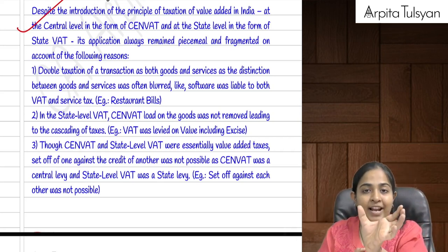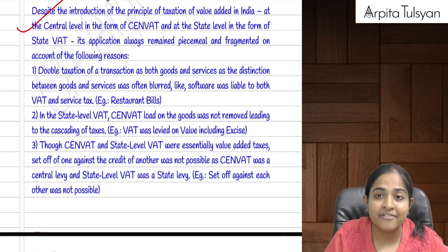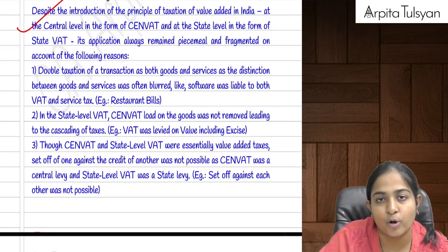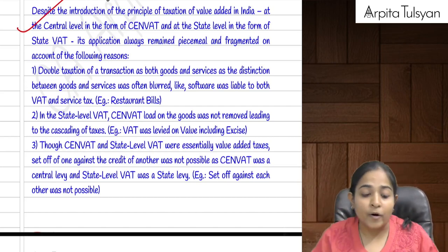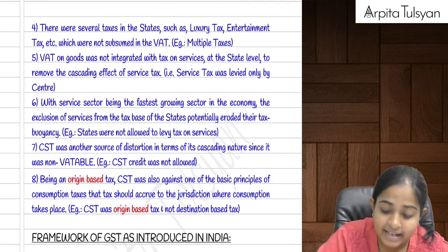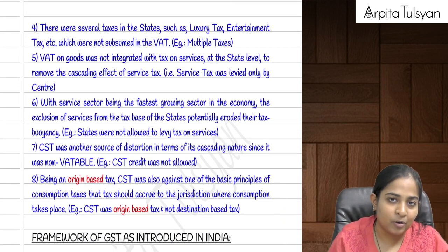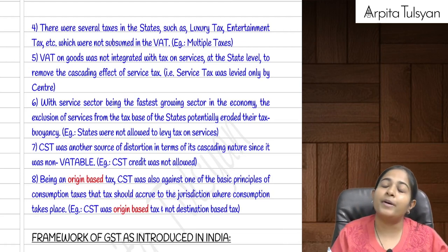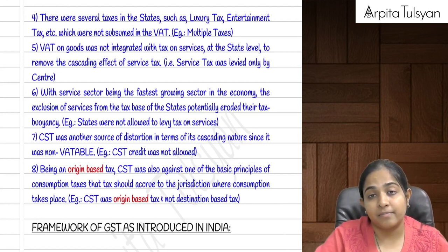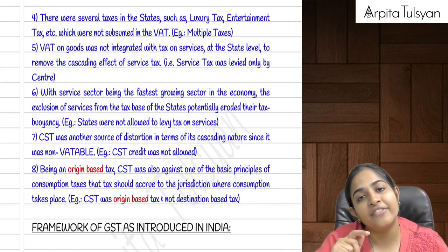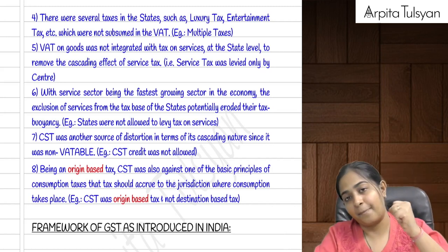Excise duty was levied on manufacture of goods, and VAT was also applicable on the same value. Also, CENVAT credit — the credit of excise duty levied on manufactured goods — was not available, so it was considered as a cost, which increased overall cost. There were multiple other taxes like luxury tax, entertainment tax, and others, and credit was obviously not available for those either, further increasing costs.